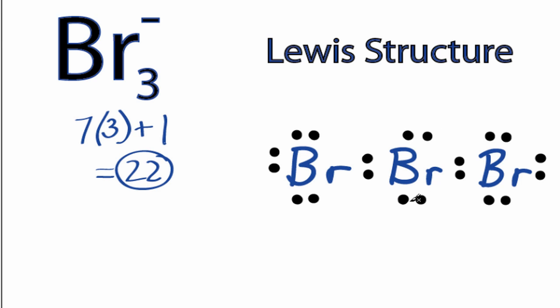So everything has octets now, but we've only used 20, so we have an additional 2 valence electrons that we're going to have to do something with. Because bromine is below period 2 in the periodic table, that means that it can have an expanded octet, it can have more than 8 valence electrons. So we'll put these last 2 valence electrons on the central bromine.